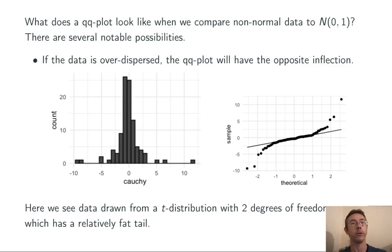Conversely, if the data is over-dispersed, like from a T-distribution, then the QQ plot is going to have the opposite inflection. On the left end of this plot, the data is below the QQ line, and on the right end of the plot, the data is above the QQ line. Here, I've drawn some data from a T-distribution with two degrees of freedom that has a much fatter tail than the normal distribution.